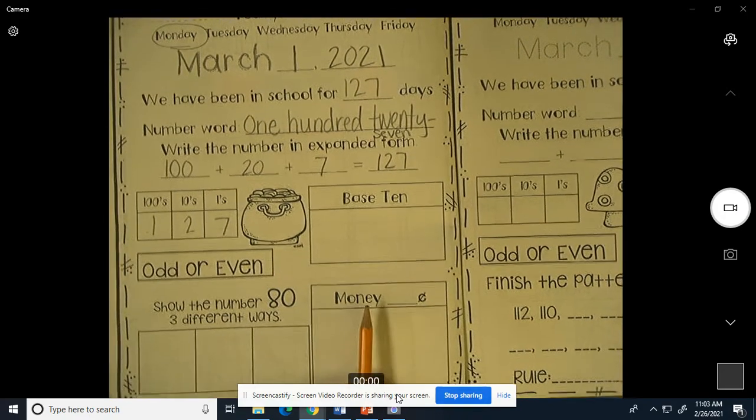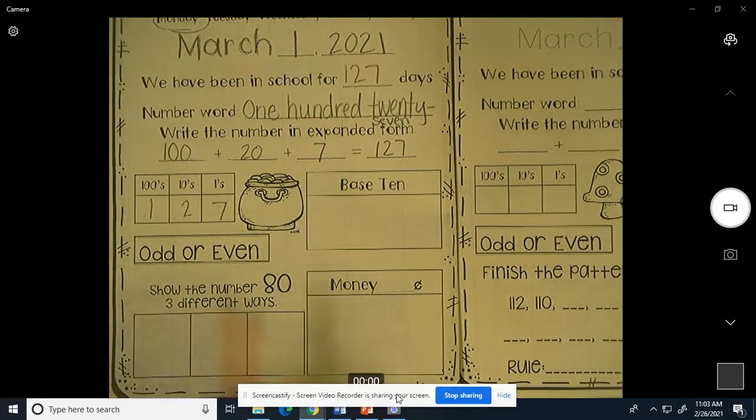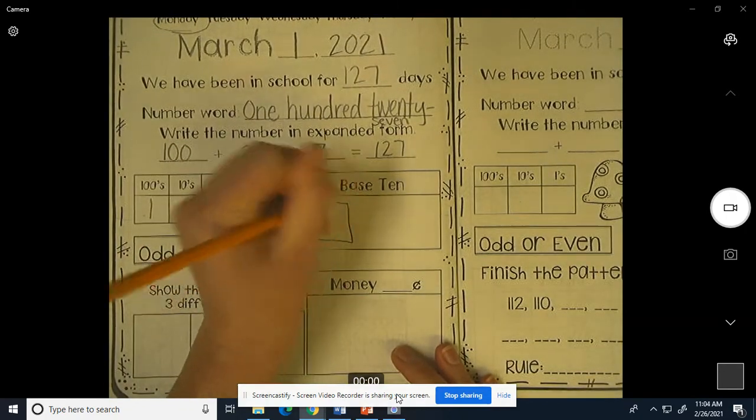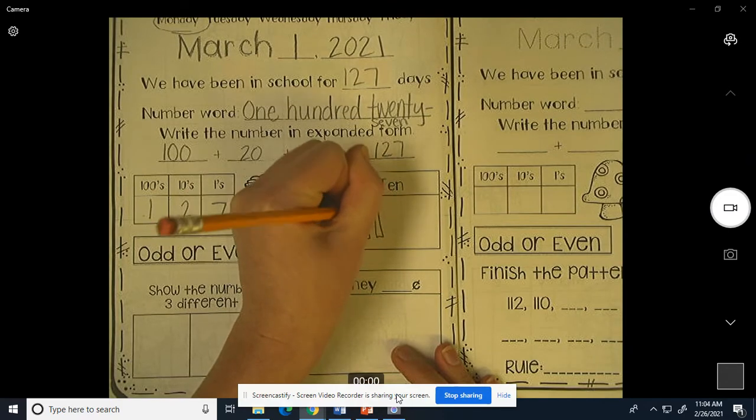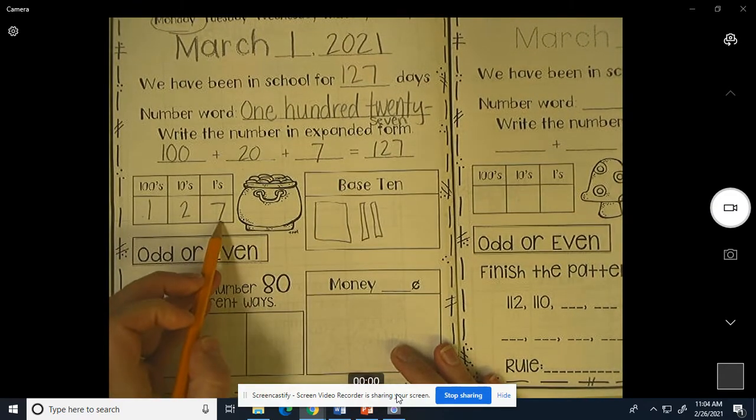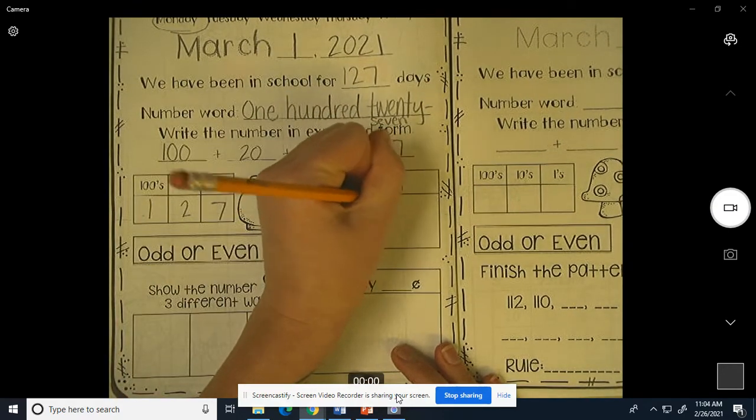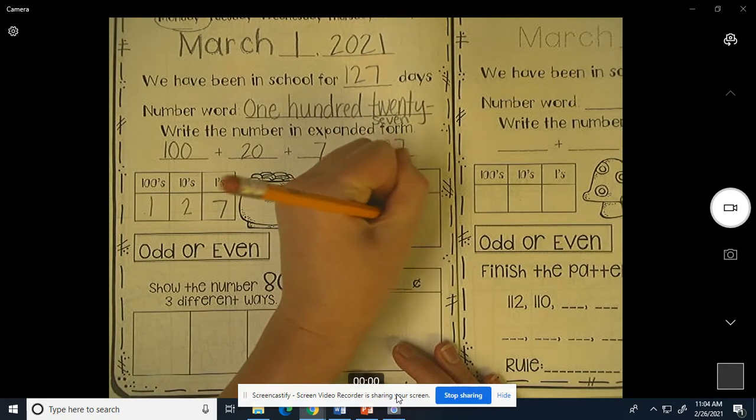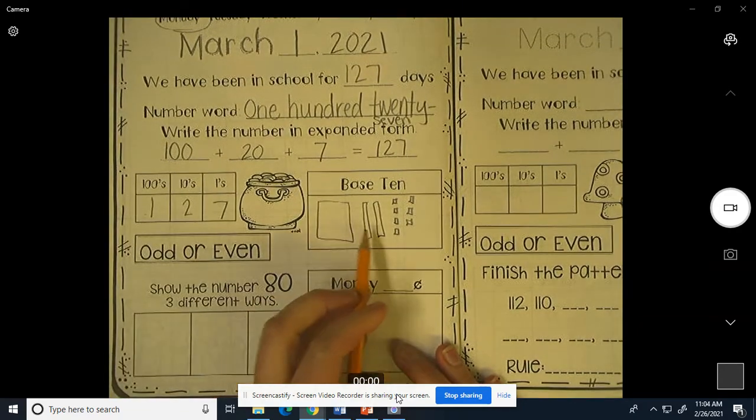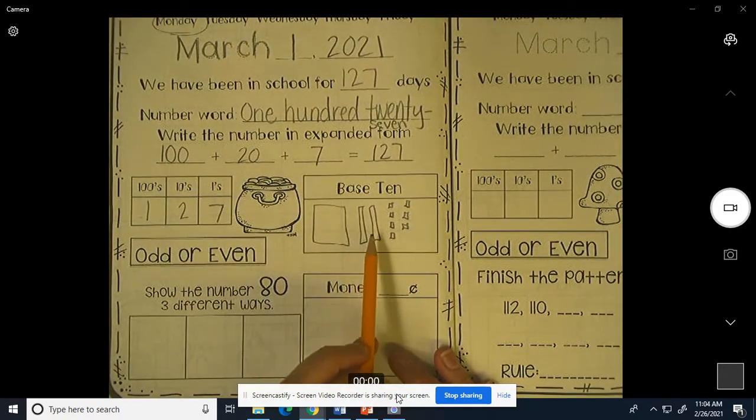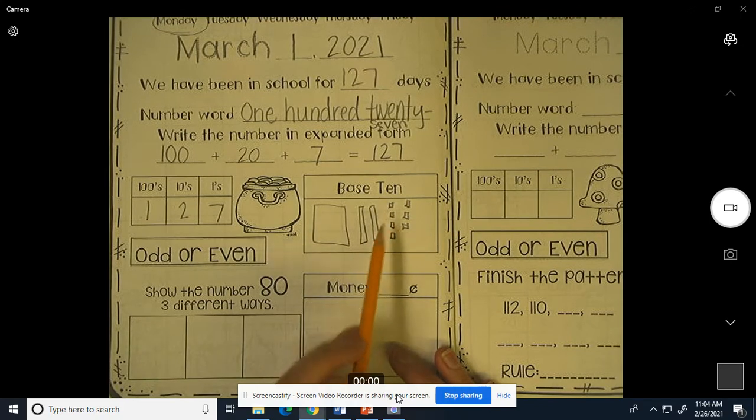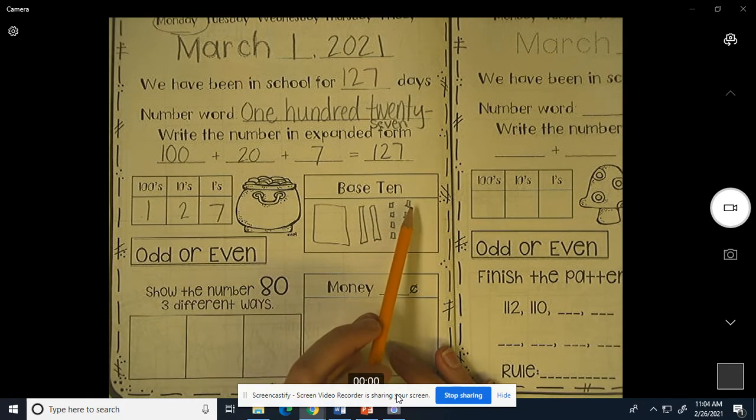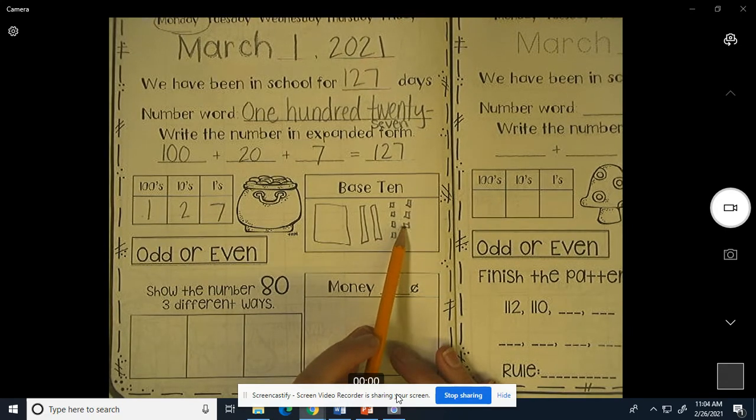We're going to draw it now in base 10 blocks. So how many crackers do we need? Crackers are hundreds. We need 1 cracker. We need 2 pretzel sticks. And we need 7 marshmallows. 127. 100, 110, 120, 121, 122, 123, 124, 125, 126, 127.